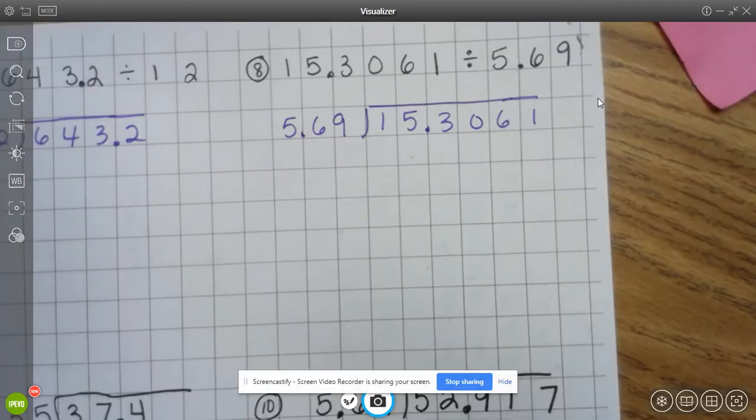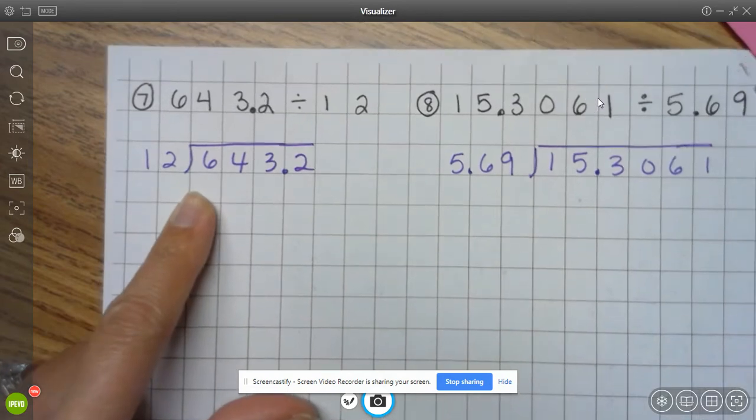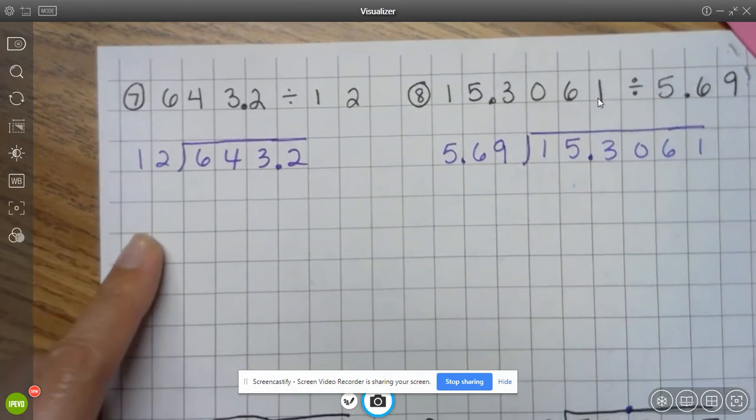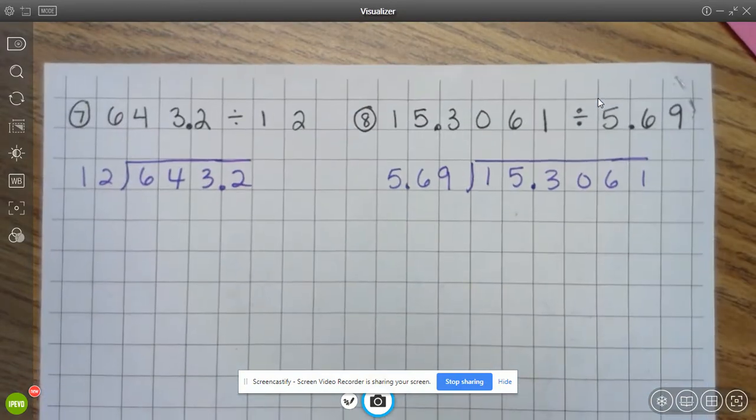Okay guys, so here we go. On number eight - so number seven, I've set up your problem for you. The correct answer is, I think we did that already, right? 53 and six tenths.